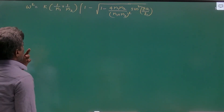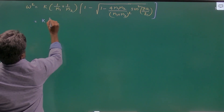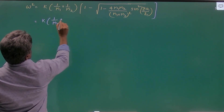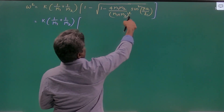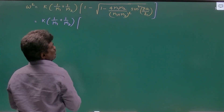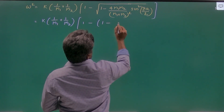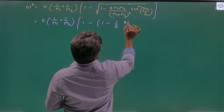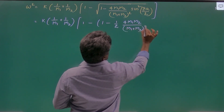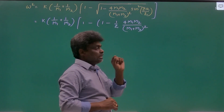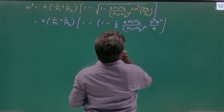So this is the omega given. Let us take the approximation: this is k times (1/m1 + 1/m2) and this can be written as 1 minus 4m1m2 by (m1+m2)² times sine squared (qa/2), all to the power 1/2. Taking the approximation you get 1 minus 1/2 times 4m1m2/(m1+m2)². And if theta is very small then sine theta equals theta, so we can write q²a²/4.